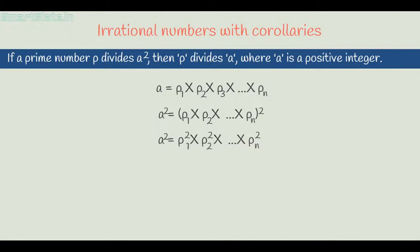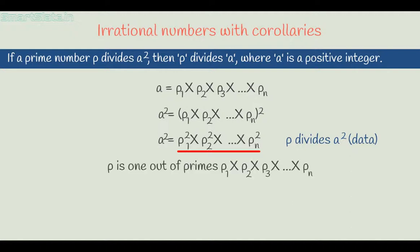According to the given statement, p divides a squared. That means p is a factor of p1 squared times p2 squared and so on up to pn squared. By the fundamental theorem of arithmetic, the primes in this factorization are unique. Therefore, p must be one of the primes p1, p2, up to pn.